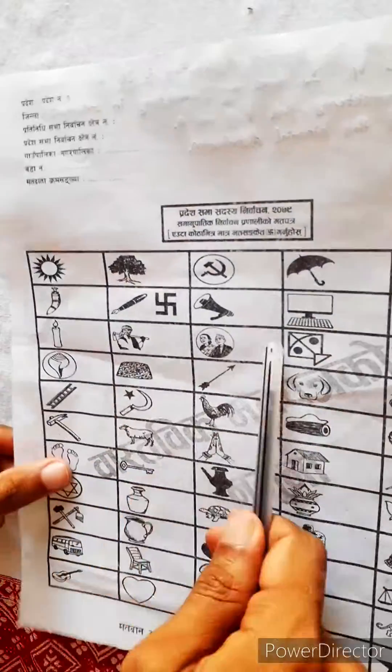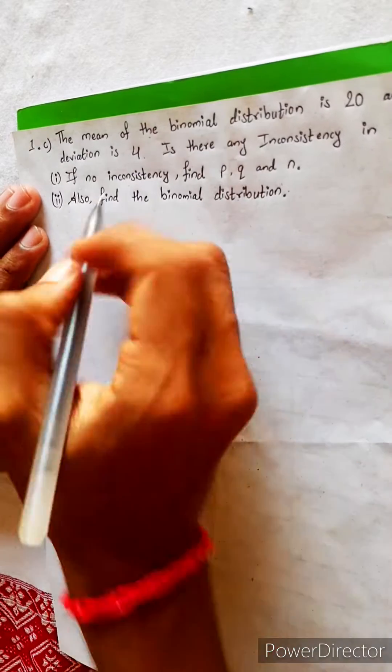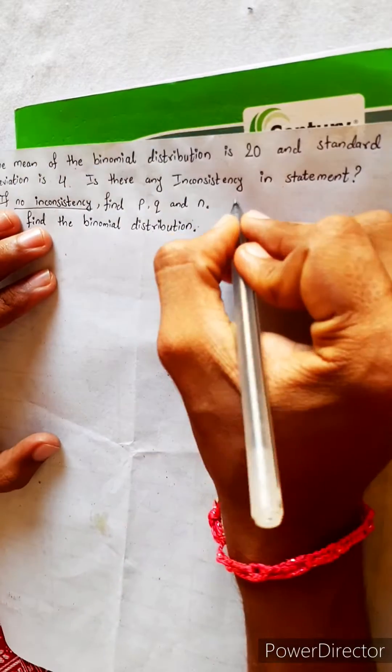They come to our house door to door to ask vote, but after vote, they disappear. So, let's solve this. If no inconsistency, this means what? No inconsistency means consistency.